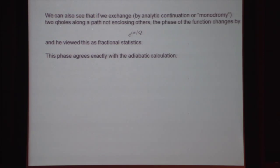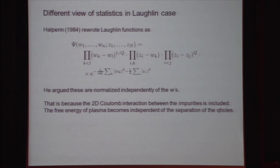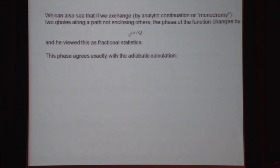Another observation: if we naively exchange quasi-holes by just analytically continuing the wave function with particle coordinates fixed — analytically continuing so that W1 is exchanged with W2 along some path — these z_i factors don't change, but the w_k minus w_l factor will change by exactly e to the i pi over Q, which is exactly the same as in the adiabatic statistics calculation. That is how Halperin talked about fractional statistics — without explicitly doing a Berry phase calculation.